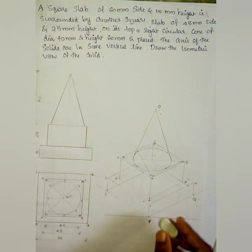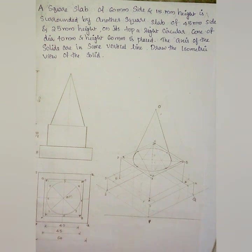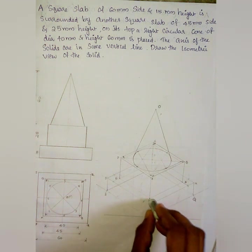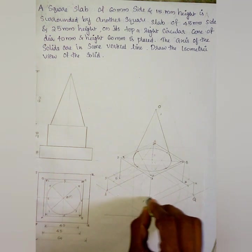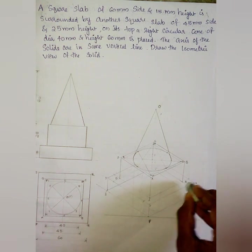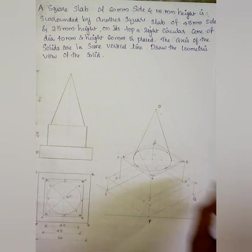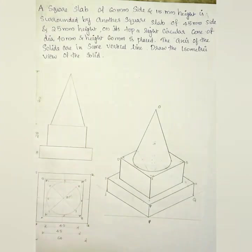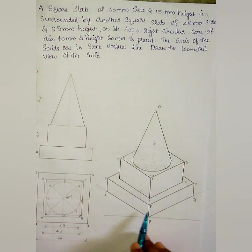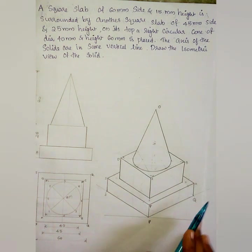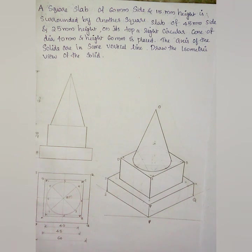Now we mark the visible lines with dark lines and the invisible lines with thin lines. We finalize all visible and hidden edges. This completes the isometric view of the combination of solids — the two square slabs and the right circular cone on top.